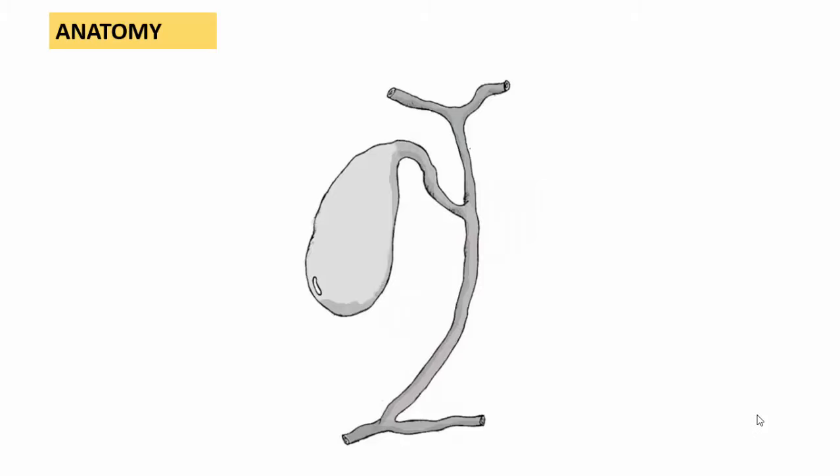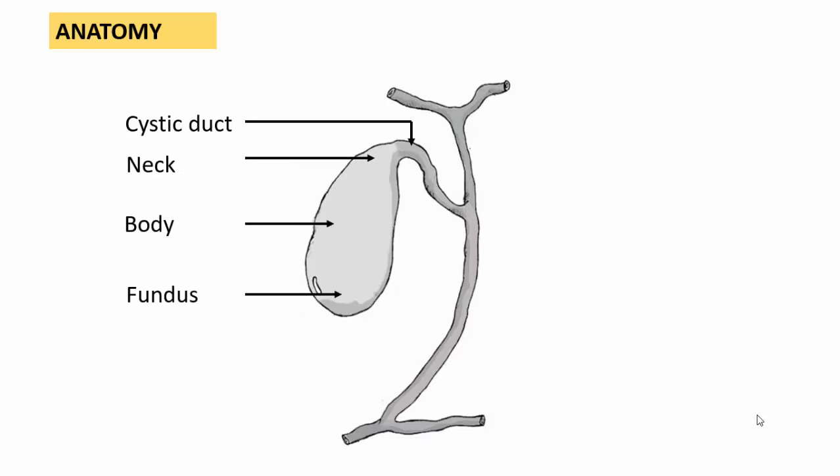Coming to anatomy, we know that the gallbladder is a pear-shaped organ roughly around 9 centimeters in length with a capacity of around 50 ml. The gallbladder is composed of the fundus, the body, and the neck, which then tapers into the cystic duct.